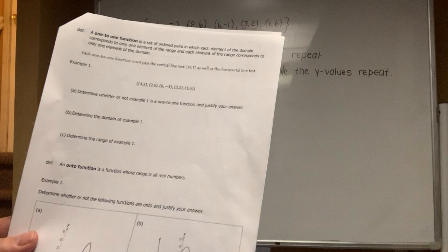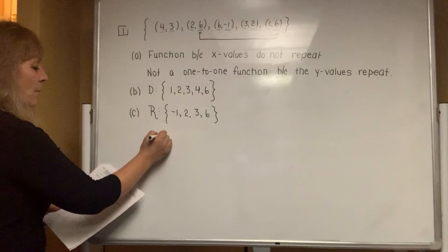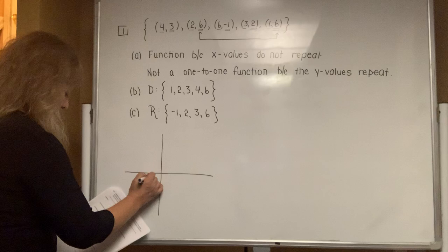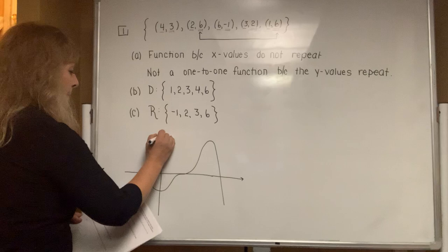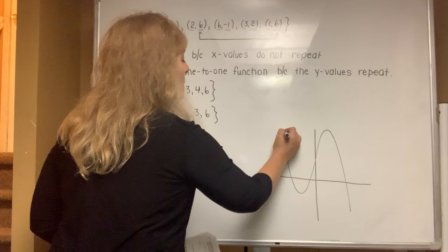Now, on the bottom, it says an onto function is a function whose range is all real numbers. So I give you these two pictures down below. Basically, the one on the left sort of looks like this.